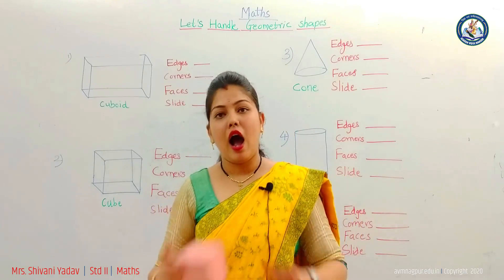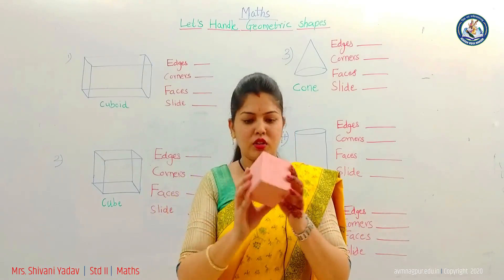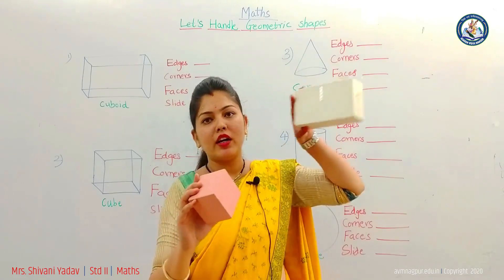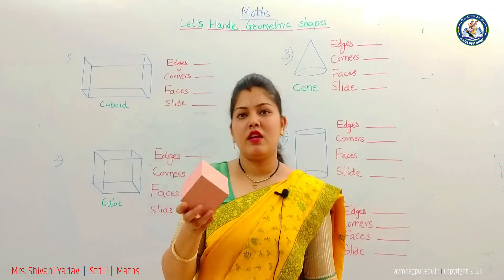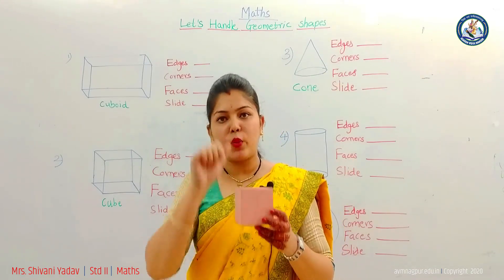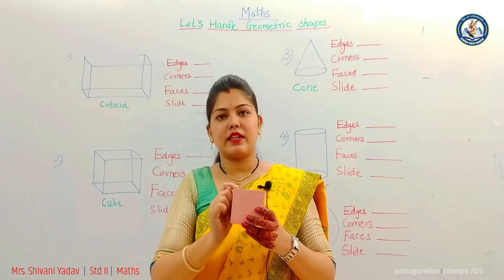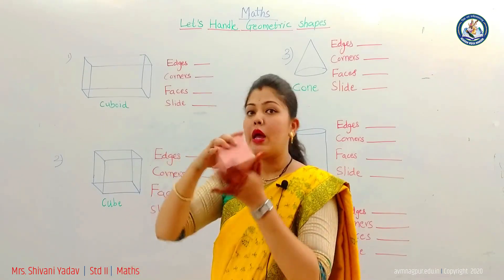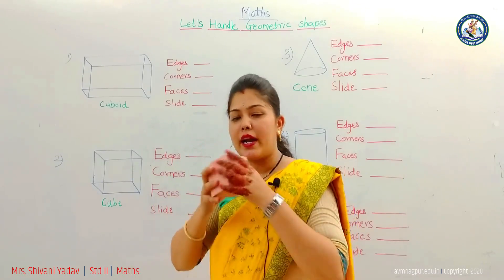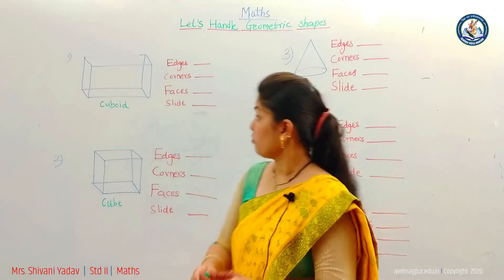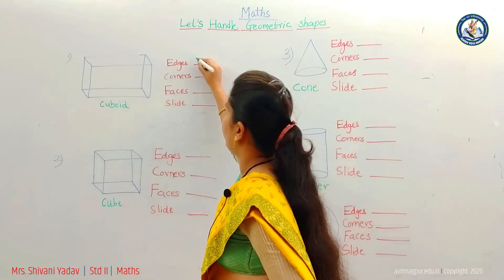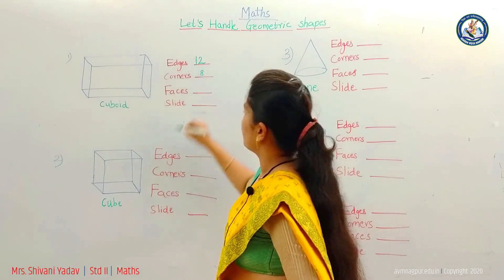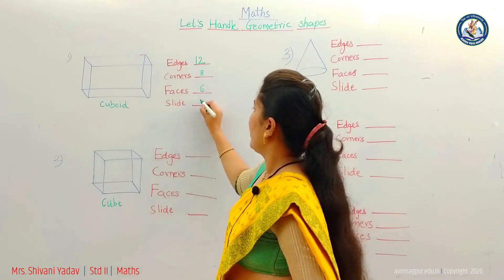Now our second shape: cube. Cuboid and cube — both are alike. But the main difference between them is, the cuboid looks like a rectangle and the cube looks like a square. Same as a cuboid, a cube also has twelve edges, eight corners, and six faces. And if we put it on a slide, it also just slips. Why? Because it also has plain faces — it does not have a rolling curved face. That's why it just slips.